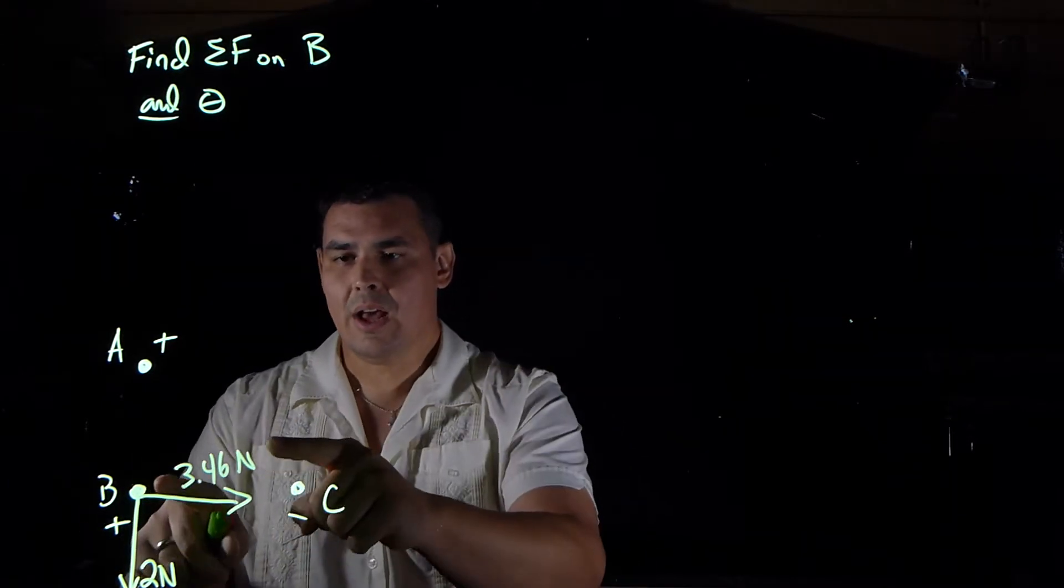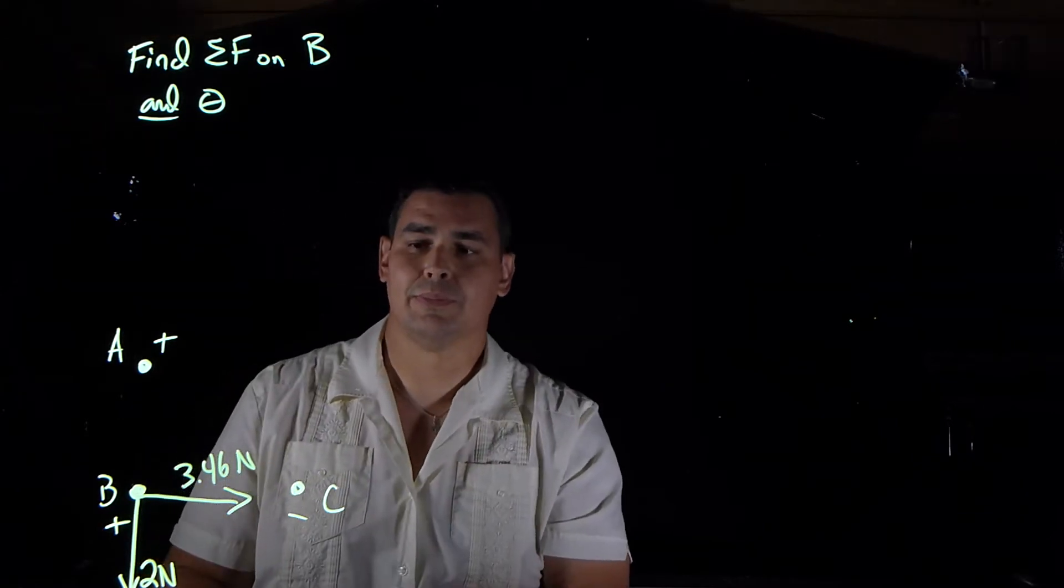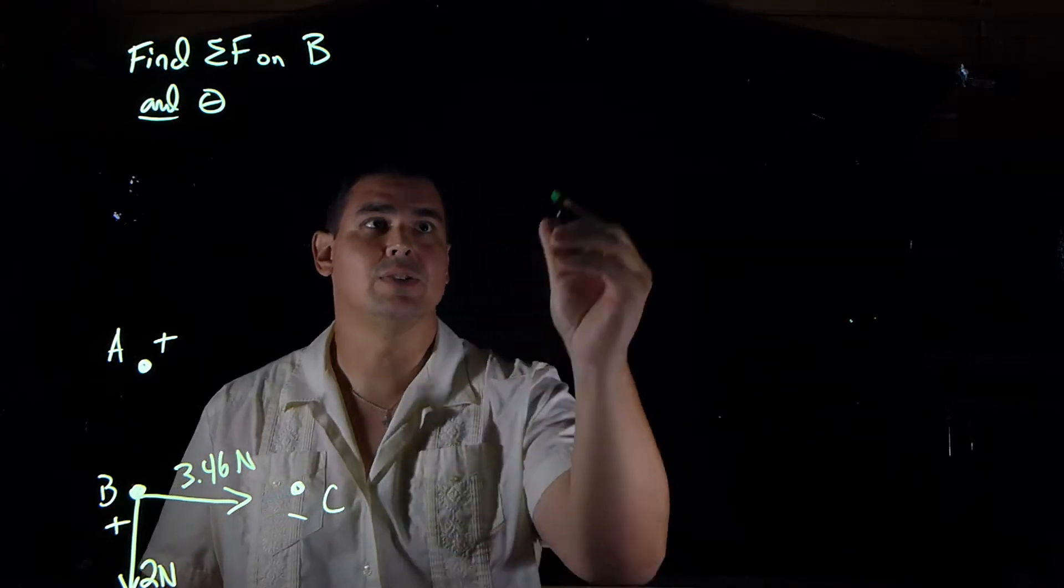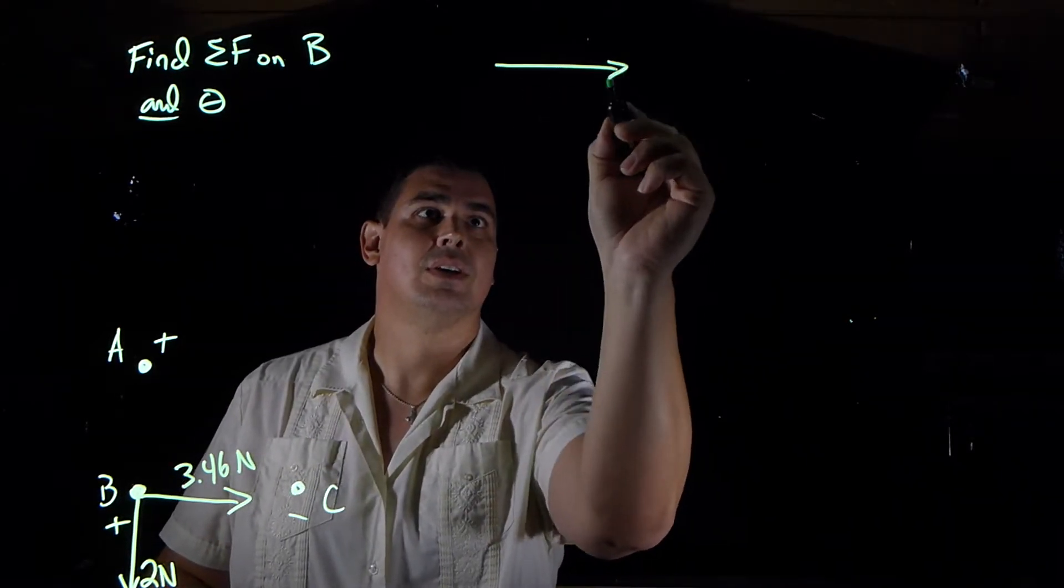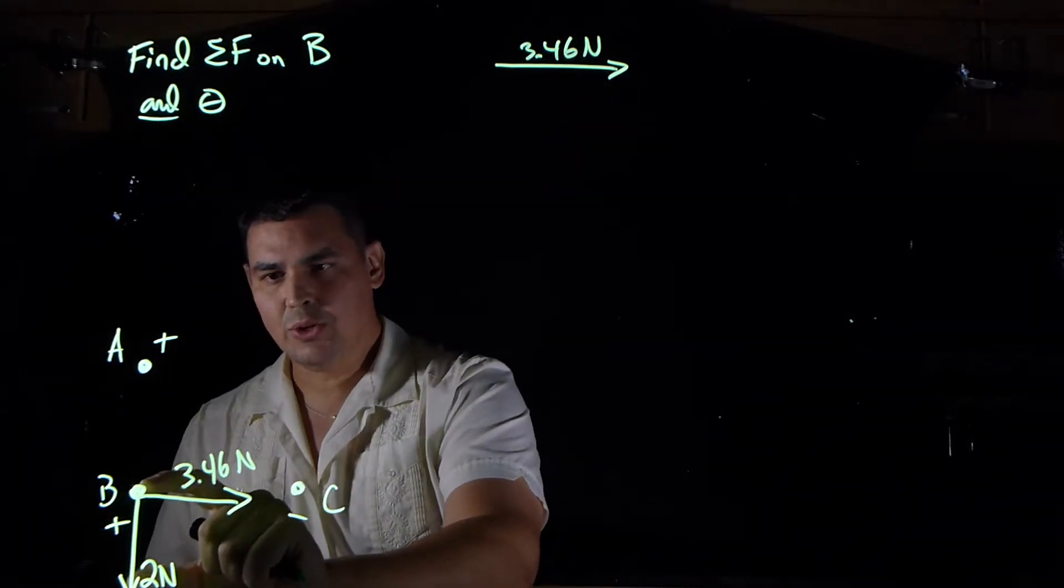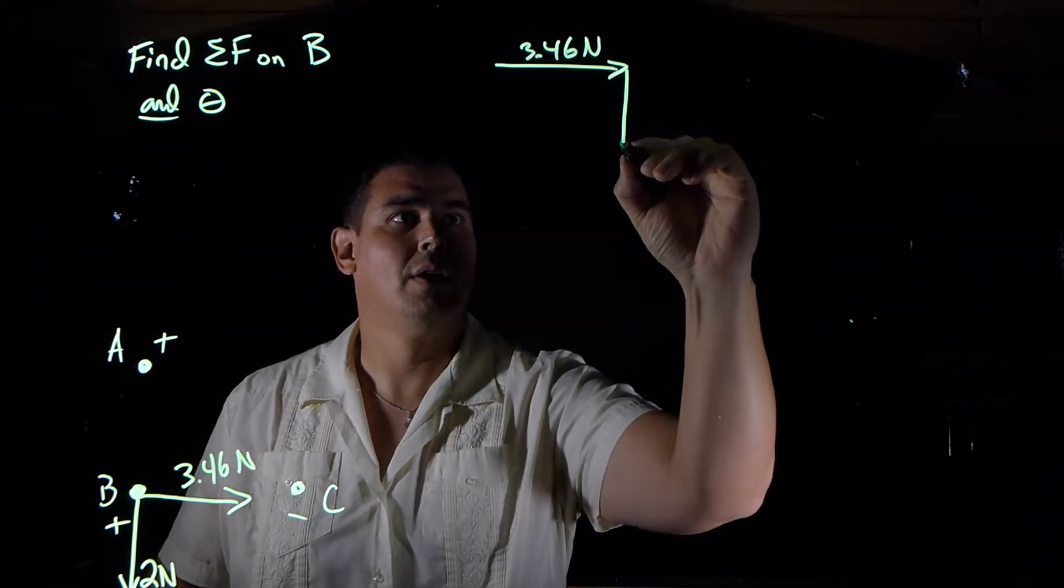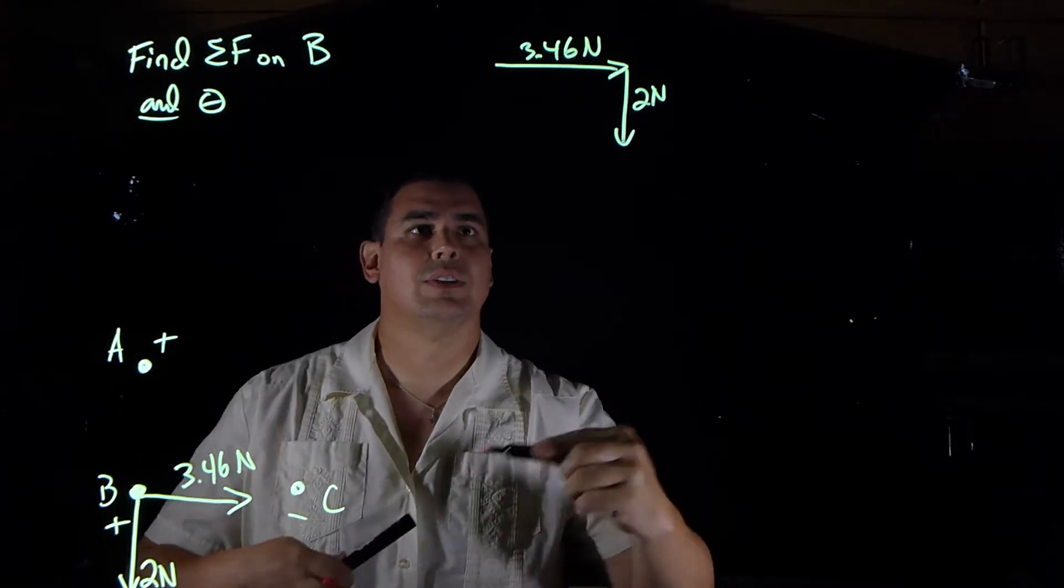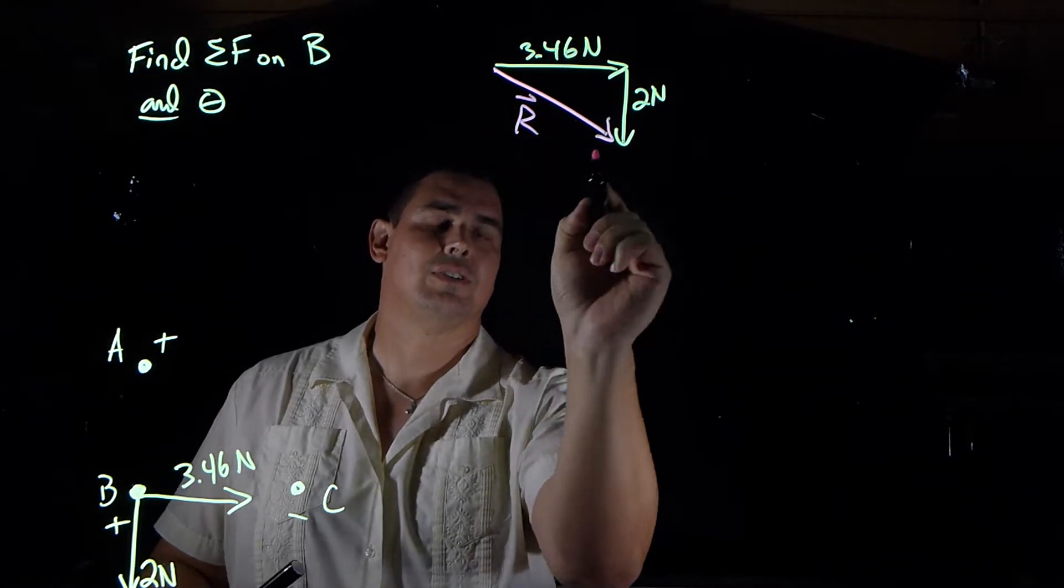Okay, so now I want to find the net force acting on B, which is the vector sum of those two. So what we do first is use superposition to draw those vectors. I'm going to start with the 3.46, and then imagine taking this 2 newton one, and remember head to tail, putting it right up here. So the resultant is that, from start to finish.